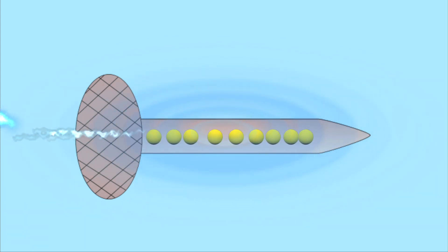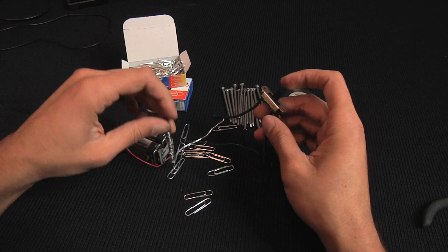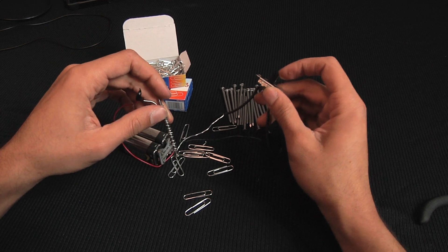This increased the size of the magnetic field and made the nail a magnet. Once the electric current in the nail is turned off, the atoms in the nail return to a random state and it is no longer magnetic.